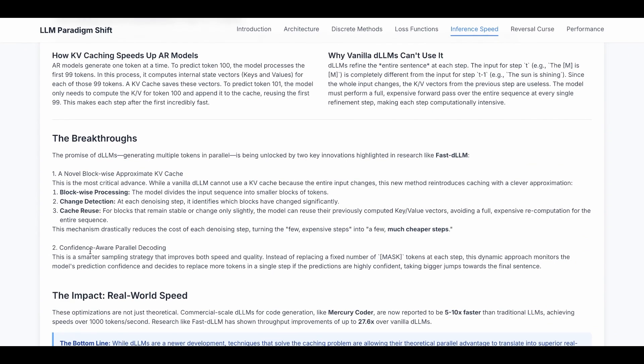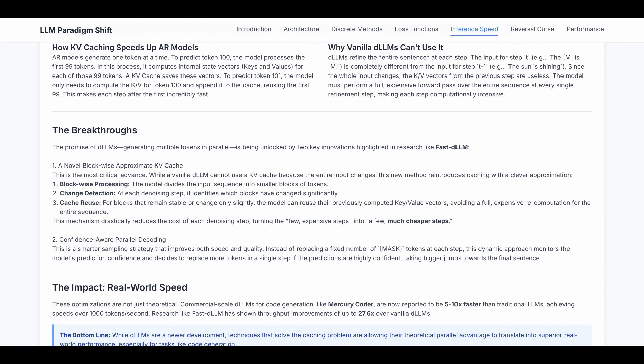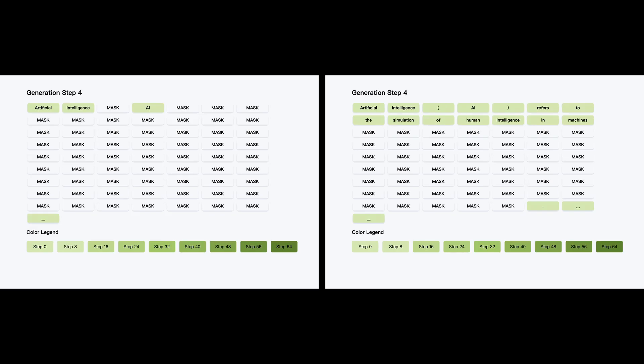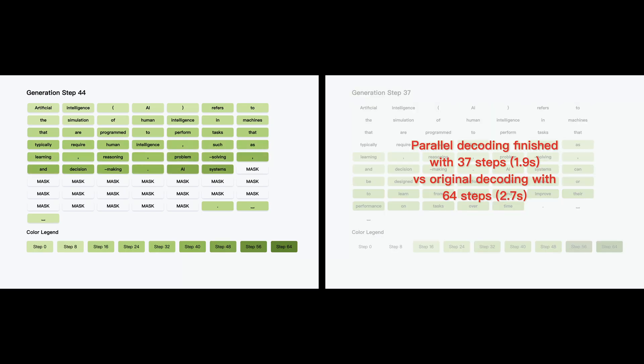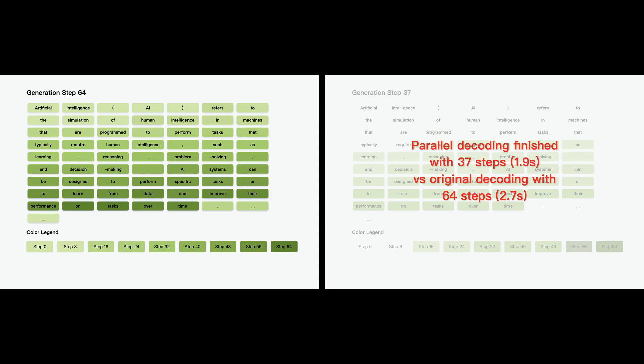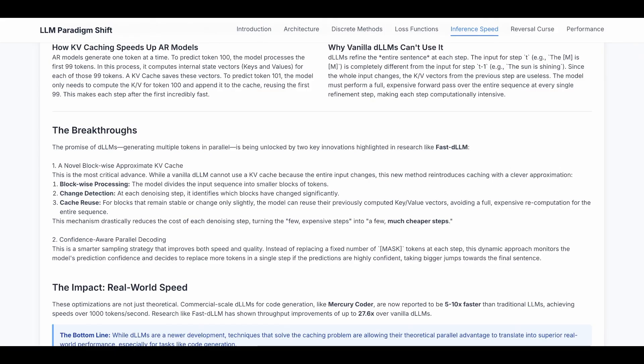The next improvement is confidence-aware parallel decoding. This is a smarter sampling strategy that involves both speed and quality. Instead of replacing a fixed number of mask tokens at each step, this dynamic approach monitors the model's prediction confidence and decides to replace more tokens in a single step if the predictions are very highly confident. So this takes bigger jumps towards the final sentence and reduces the steps needed.